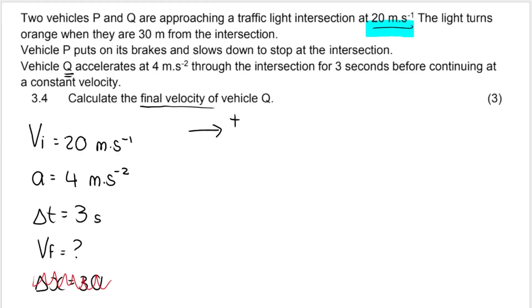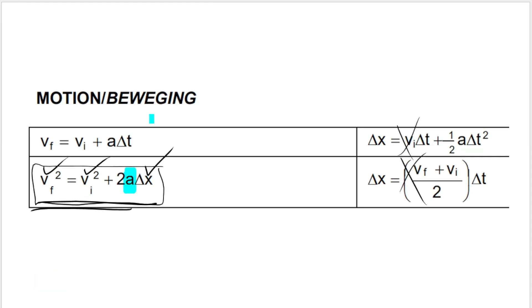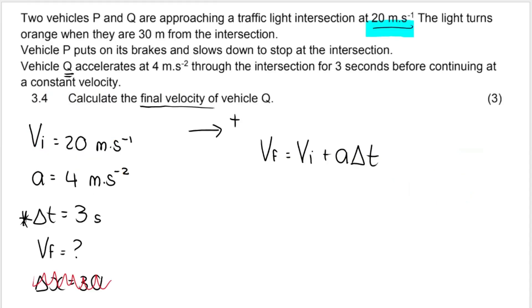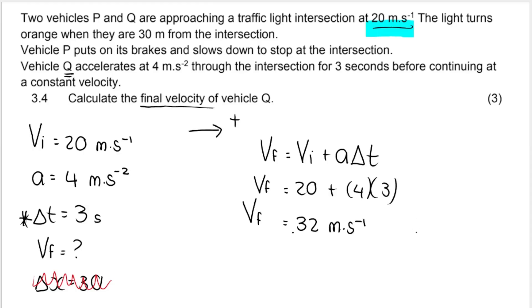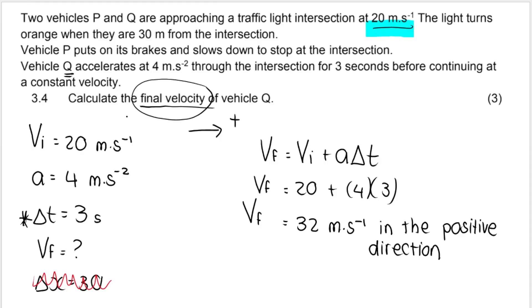Since I have time now, I select a different formula. I have initial velocity, acceleration, and time — and I want final velocity. So I use: VF = VI + a·t. VF is what we're looking for. VI is 20, acceleration is 4, and time is 3. Final velocity is therefore 32 meters per second in the positive direction, towards the traffic lights. You must give a direction because they asked for velocity, not speed.